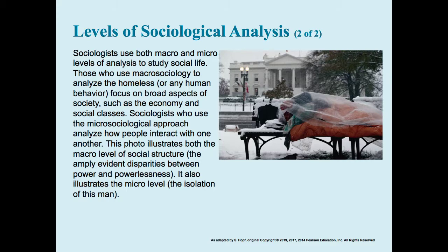This slide helps illustrate aspects of the macro and micro perspectives. The power and social structure from the macro perspective is evident in the Capitol and White House in the background, while the isolation and daily experience of the man laying on the bench, as well as his personal social class and lack of power, help to illustrate the micro perspective. Both perspectives are valuable to sociologists — you can't fully understand society without seeing both.